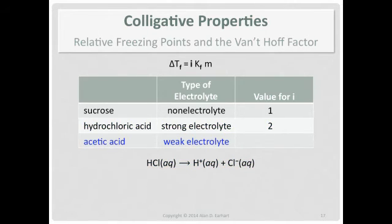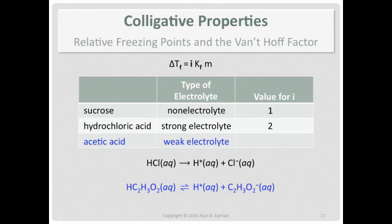Acetic acid is a weak acid — it dissociates with a double arrow indicating an equilibrium going both directions. On average maybe about five percent or so of the molecules dissociate. That means the i value is greater than one because some dissociation occurs, but less than two because dissociation is not complete. So the best we can do without actual numerical data is say that i is greater than one and less than two.